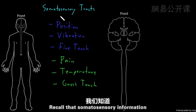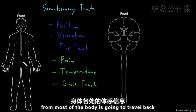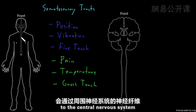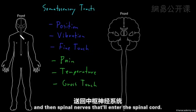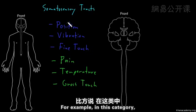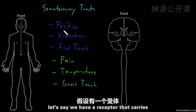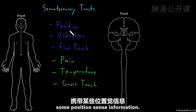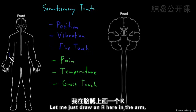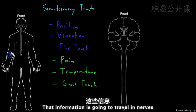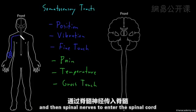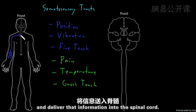Somatosensory information from most of the body is going to travel back to the central nervous system through nerves in the peripheral nervous system, and then spinal nerves that will enter the spinal cord. For example, a receptor that carries position sense information in the arm will travel in peripheral nerves and then spinal nerves to enter the spinal cord.